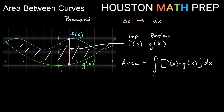Our bounds go from a to b. The leftmost point of the bounded region is where x equals a — that's the lower bound for the integral. The rightmost point of the bounded region is where x equals b — that's the upper bound. So when finding bounds, the leftmost point is the lower bound and the rightmost point is the upper bound, giving us the area between the two curves.